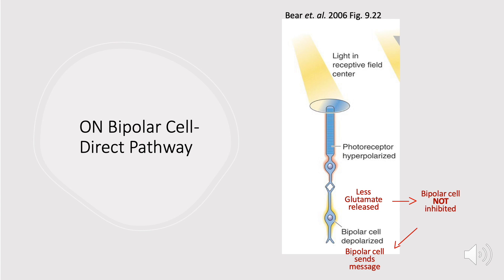Keep in mind we're dealing with an on bipolar cell, which has metabotropic receptors that are normally inhibited by glutamate. Because we have less glutamate released, we're not inhibiting our bipolar cell's metabotropic receptors — so the bipolar cell gets the message, gets depolarized, and continues on to send its signal. That's the direct pathway of the on bipolar cell.